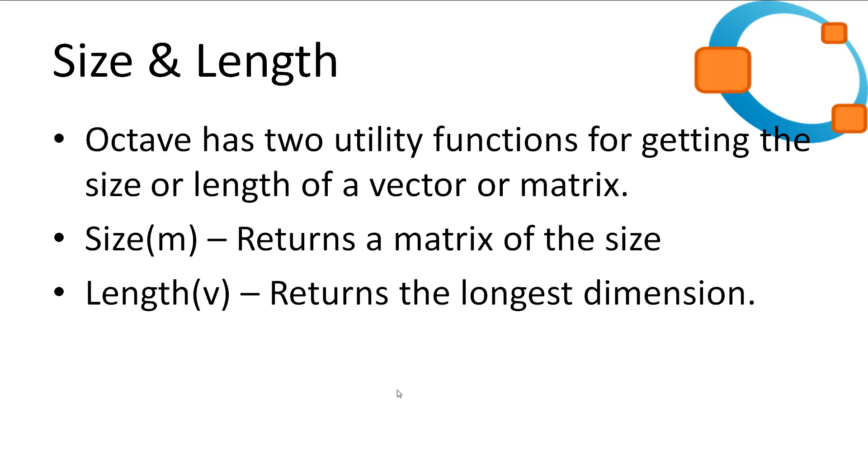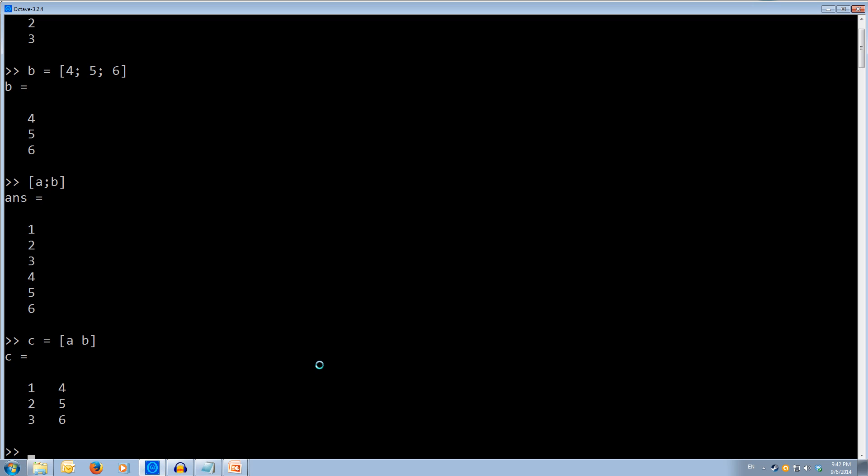So let's have a quick look and see how it works. So we'll use our c variable that we just created. So if we do size of c, we get back a matrix, a two by one matrix. So we get three and two. So it's got three rows and two columns.